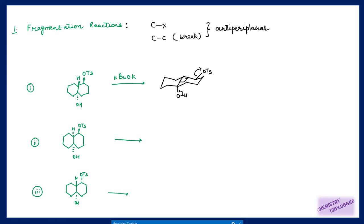When the carbon-carbon bond fragments and breaks, a new double bond forms at this position and the leaving group is removed. The carbon-leaving group bond and this bond should be anti-periplanar, and this is true for this case because these two are anti-periplanar. So this bond can break and we will get a new double bond at this position.